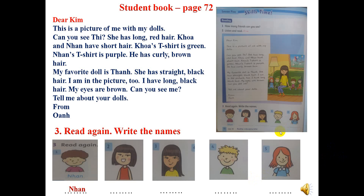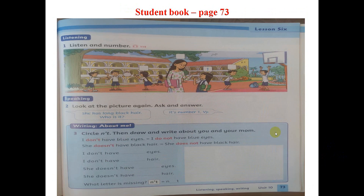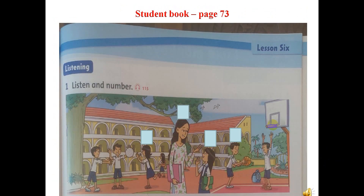We continue to open page 73. Listen and write. Các con mở trang 73. Ở phần 1, nghe và đánh số. Các con quan sát trong bức tranh — có 4 ô vuông. Các con sẽ nghe và đánh số thứ tự cho cô.